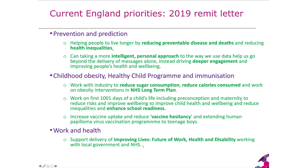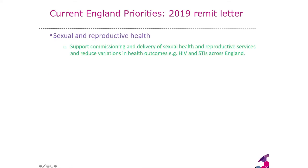Third is working around workplaces and health — the key policy being 'Improving Lives: The Future of Work, Health and Disability', undertaken with local government and the NHS. The fourth element is smoking, through delivering the tobacco control delivery plan. Then we move on to sexual and reproductive health — supporting the commissioning and delivery of sexual health and reproductive services and reducing variations in HIV rates, STI rates and treatment and prevention approaches across England.